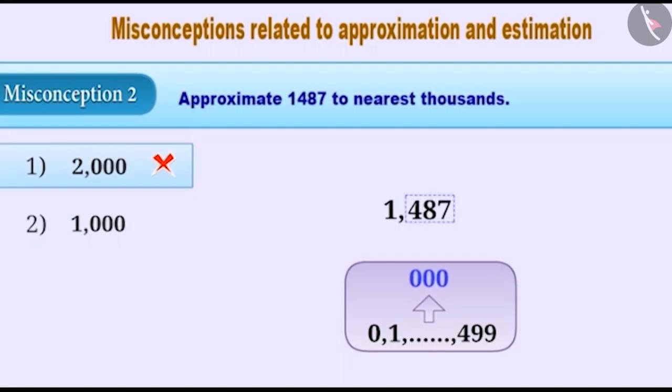The number formed by the last three digits of 1487 is 487, which is close to 0. Therefore, by writing 0 at its place, we get the correct answer: 1000.